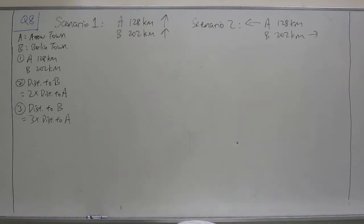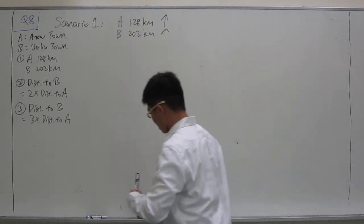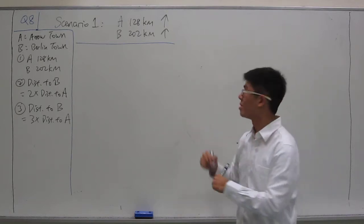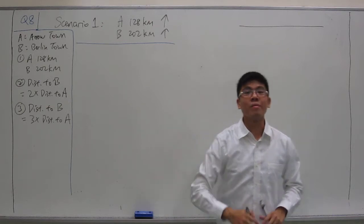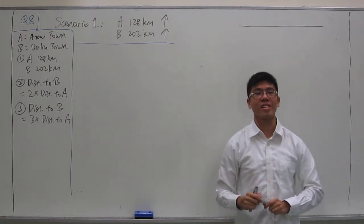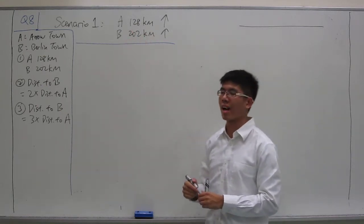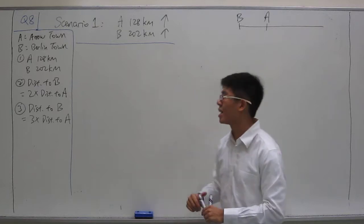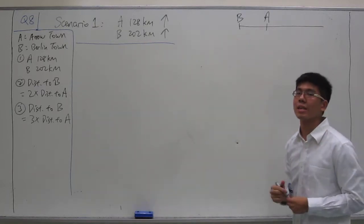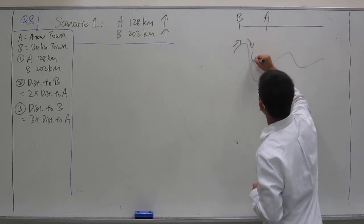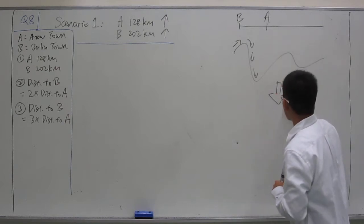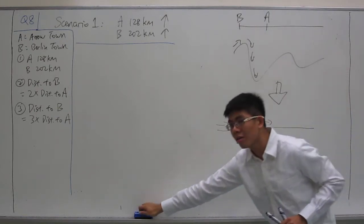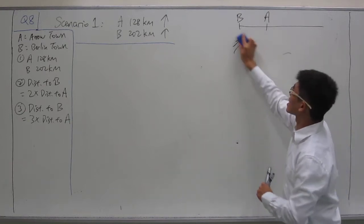Let's look at scenario 1 in greater detail. To help understand the question, we draw a diagram. Let this be the highway. We make two assumptions: first, that both A and B are along the highway; second, that the distances measured are distances along the highway. With this, we can take the highway as a straight line.